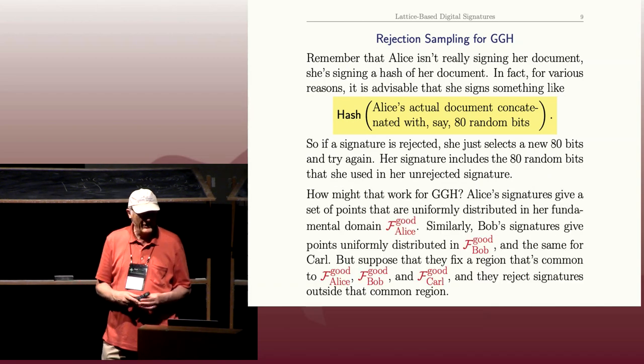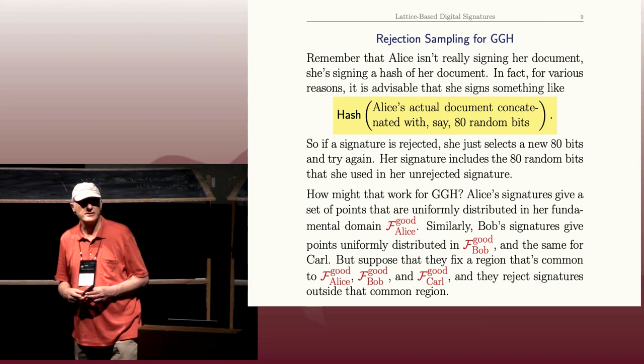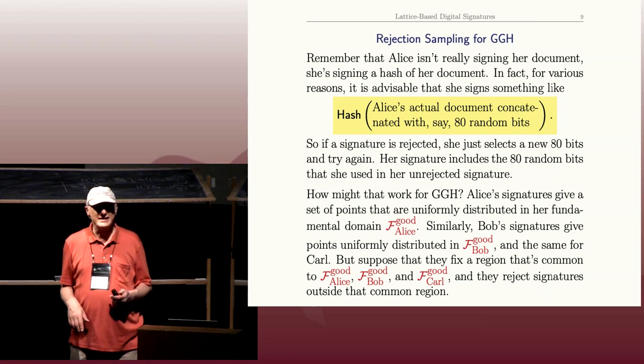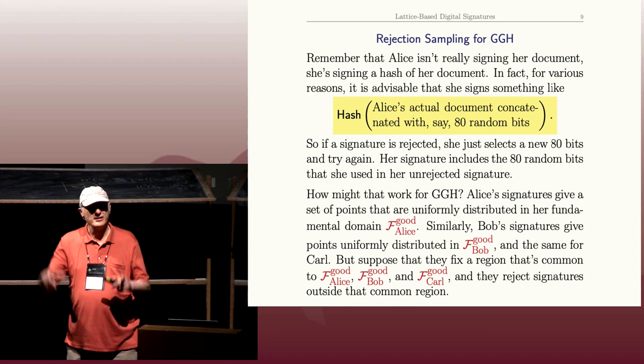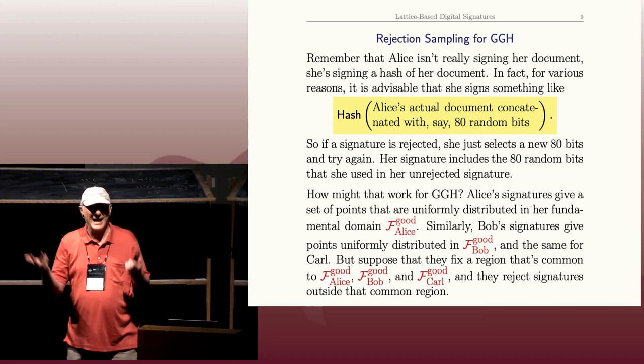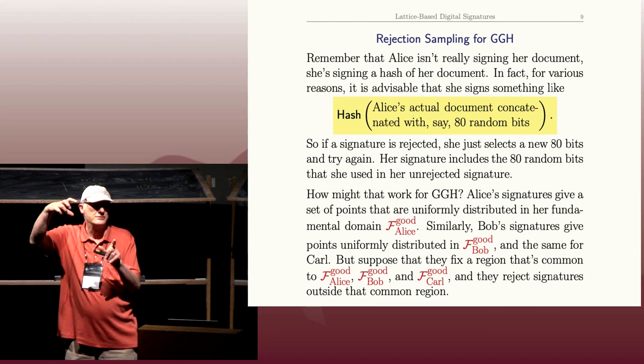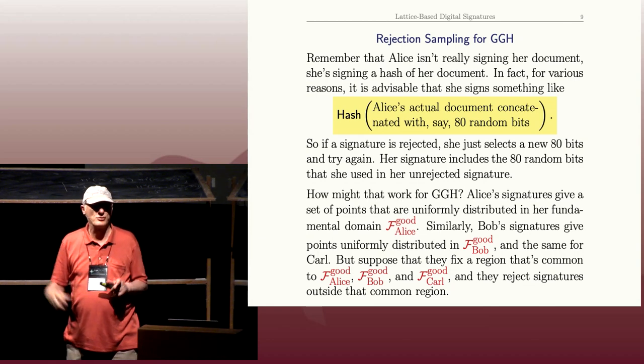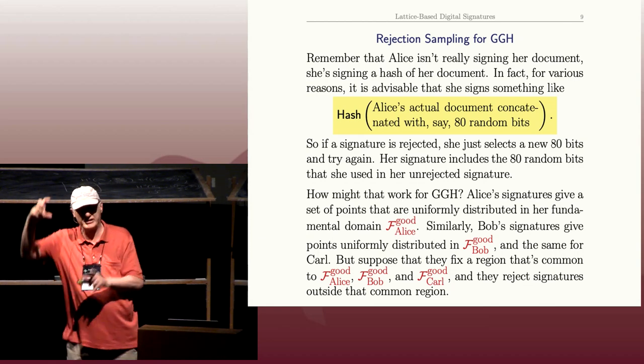So how would this work for GGH? Remember the signatures are essentially uniformly distributed in Alice's parallelogram. My signatures are uniformly distributed in my parallelogram, which is different from Alice's.